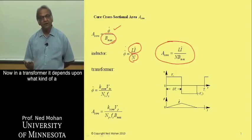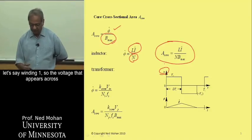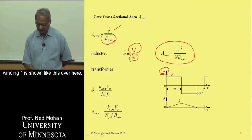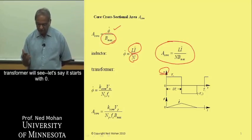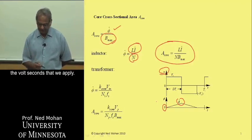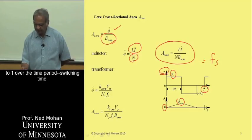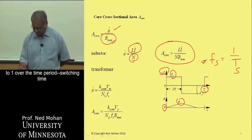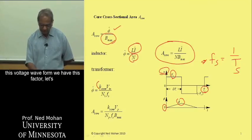For a transformer, it depends upon what kind of converter circuit the transformer is connected in. The voltage waveform appearing across winding 1 determines the peak flux the transformer sees. Starting from zero, the peak flux is based on the volt-seconds applied. That volt-seconds is related to the voltage, the switching time period Ts, and the switching frequency Fs, which equals 1 over Ts. Depending on the nature of the voltage waveform, we have a factor K_converter that depends on the converter topology.